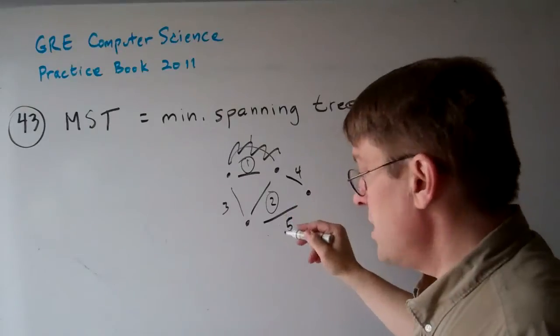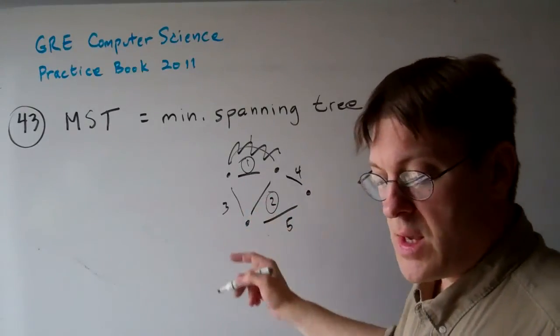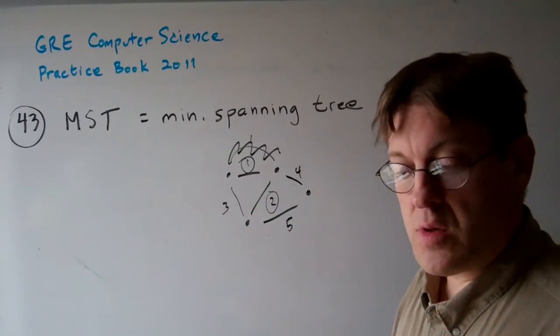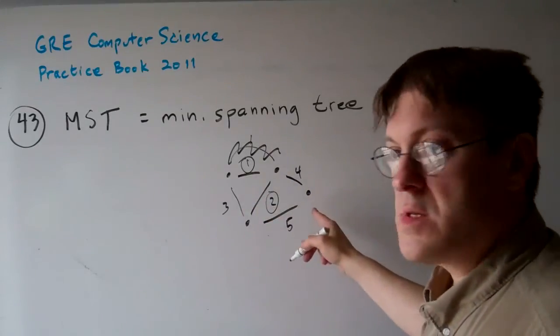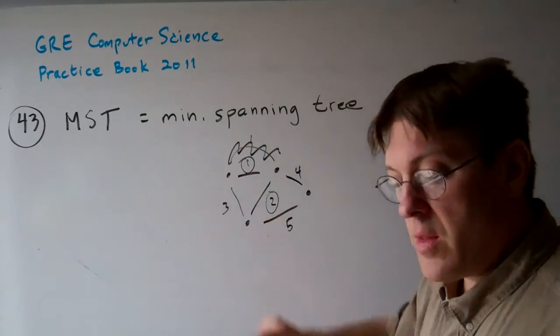So you might not have the third smallest edge, but you must have the first smallest edge and the second smallest edge in order to make the minimum spanning tree, the least distance edges covering all the graph.